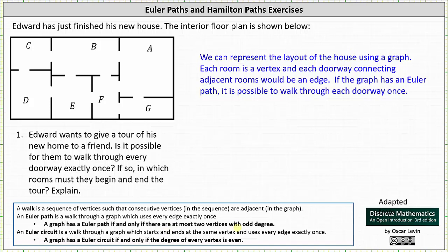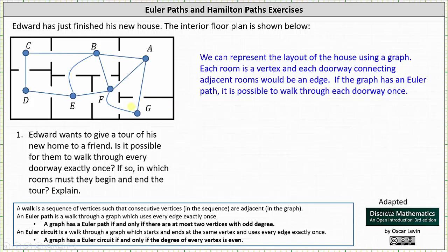The next step, we need to make a graph that represents the floor plan of the house. We first place a vertex in each room and then we connect the vertices if the rooms are adjacent and share a doorway, which gives us these as edges of the graph.